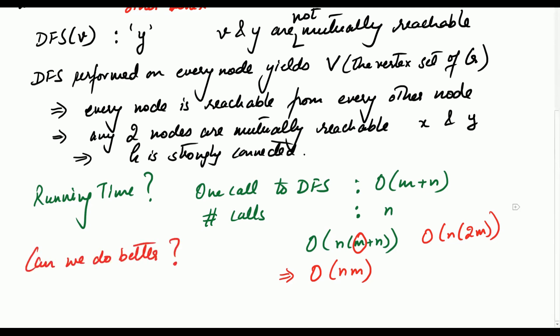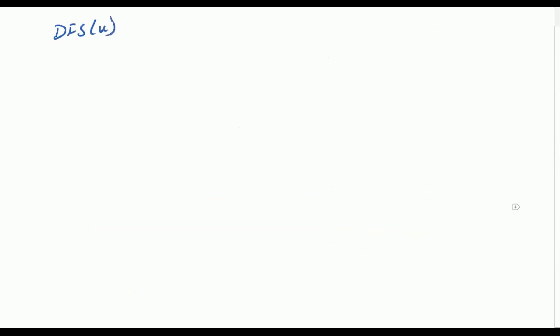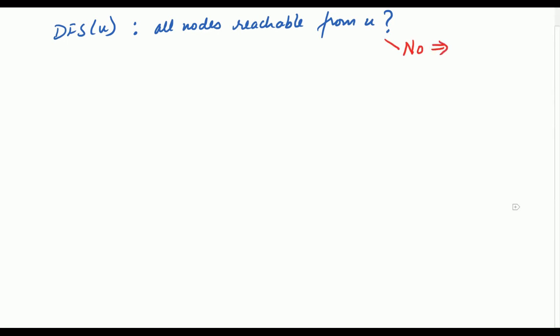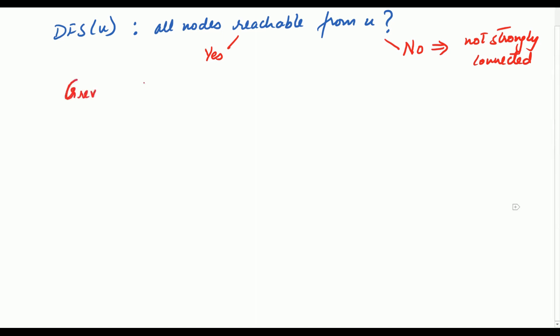Can you answer this question in linear time — that is, O(m + n)? The algorithm is very simple. You start by performing DFS on any given node U. As before, you ask: is every other node of the graph reachable from U? If the answer is no, you straight away conclude the graph is not strongly connected. But if the answer is yes — every other node is reachable from U — then instead of repeating DFS on all nodes, you do something smarter.